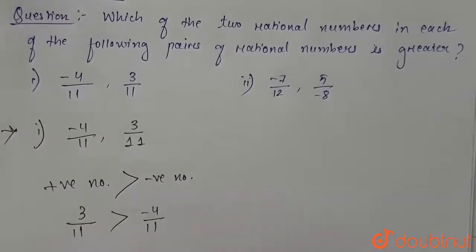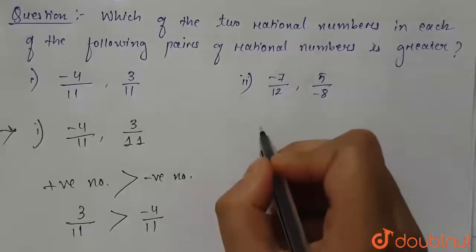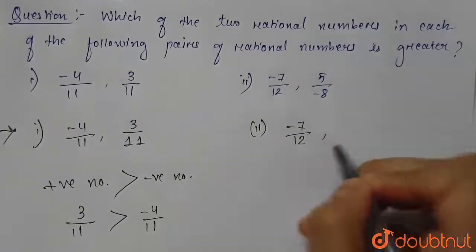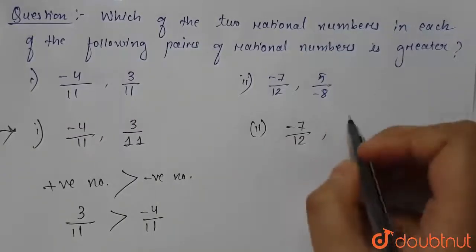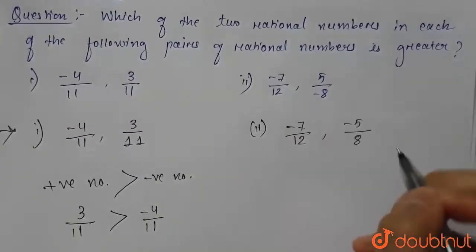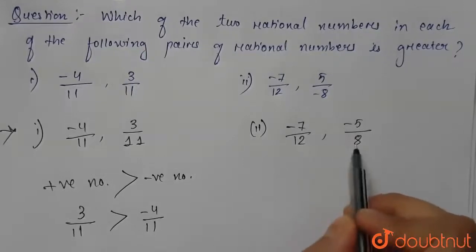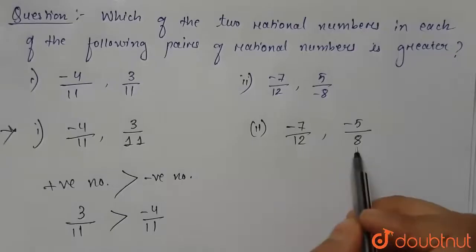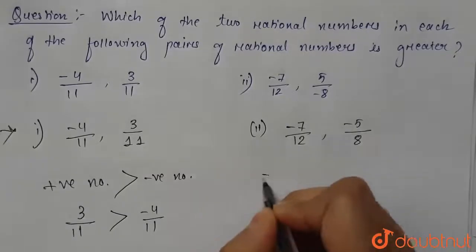Now for the second part, the pair is given as -7/12 and 5 by -8. Now this is the same as -5/8. Here we can see that both the numbers are negative numbers and the denominators are also different, so first let's make their denominators equal.